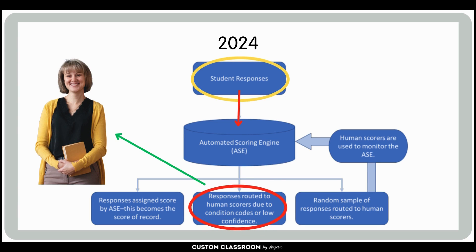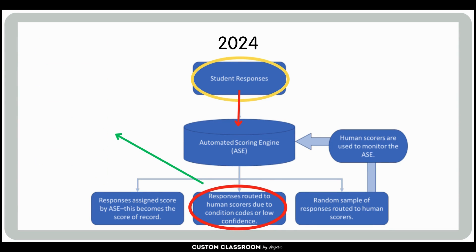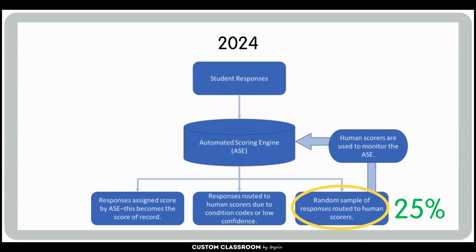However, if the ASE expresses low confidence, the response is then forwarded to a human rater for evaluation. To ensure the system's accuracy, a random sampling of 25% of student responses will be sent to human raters. This quality check ensures that the system is scoring correctly and helps identify any necessary adjustments.